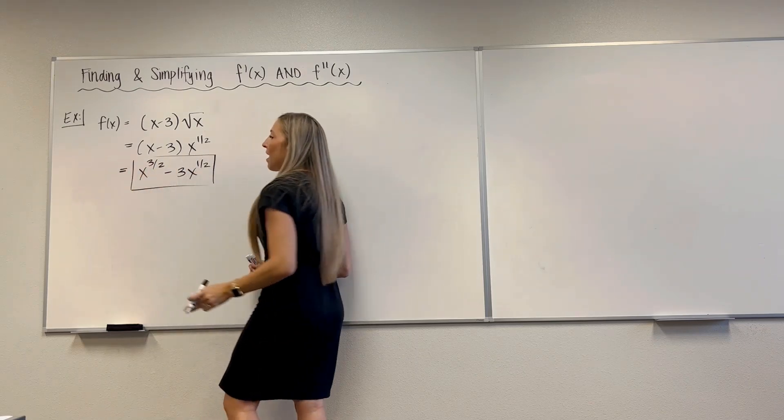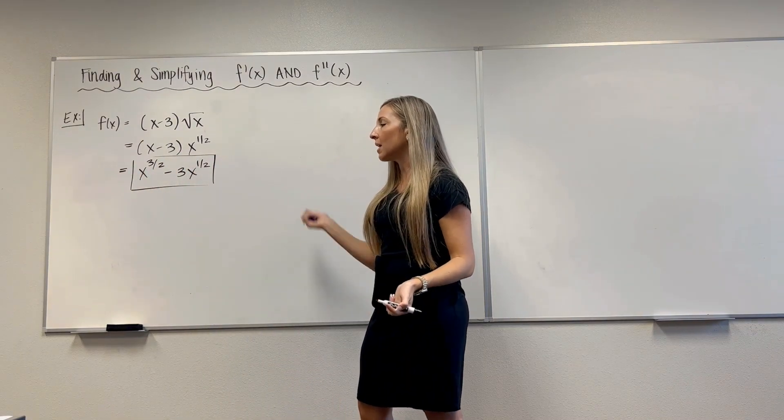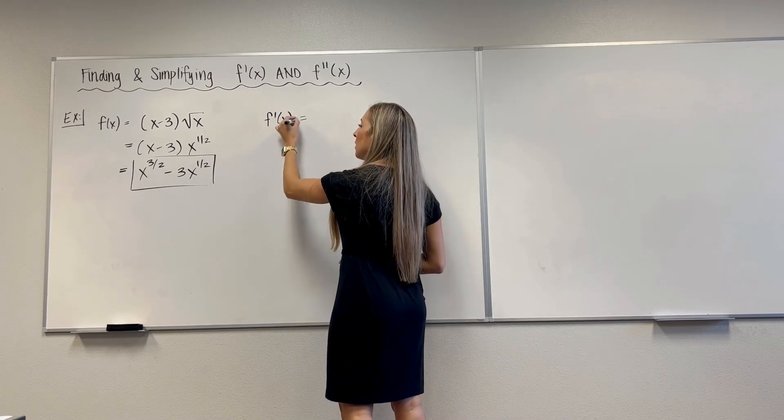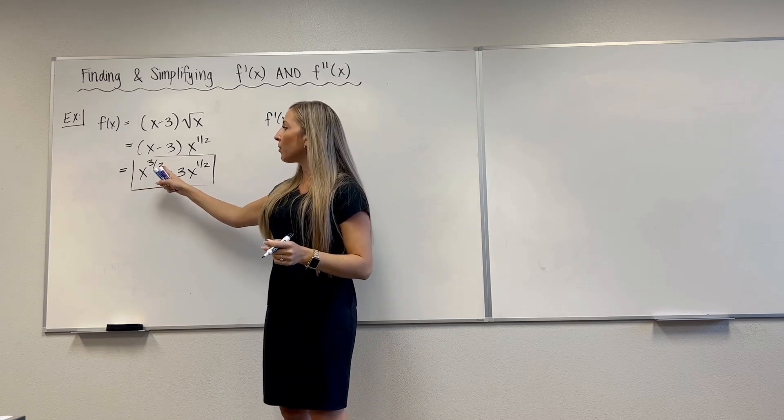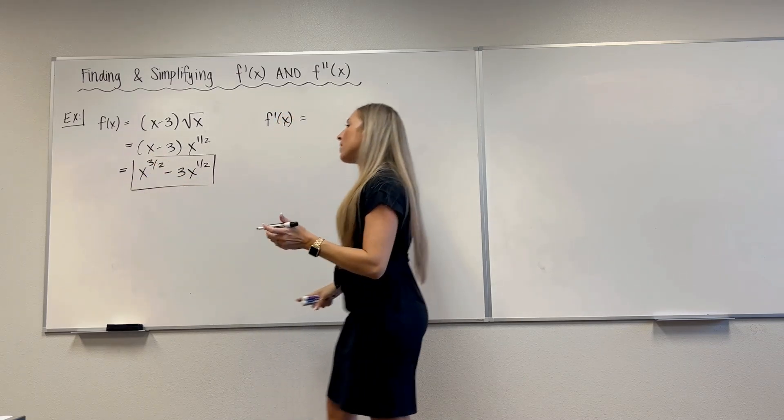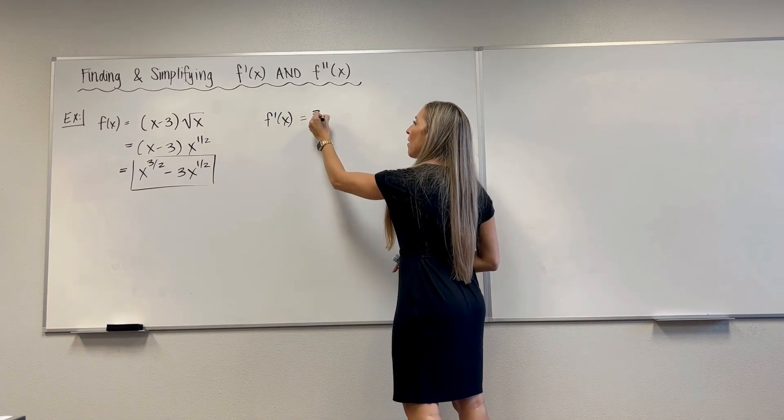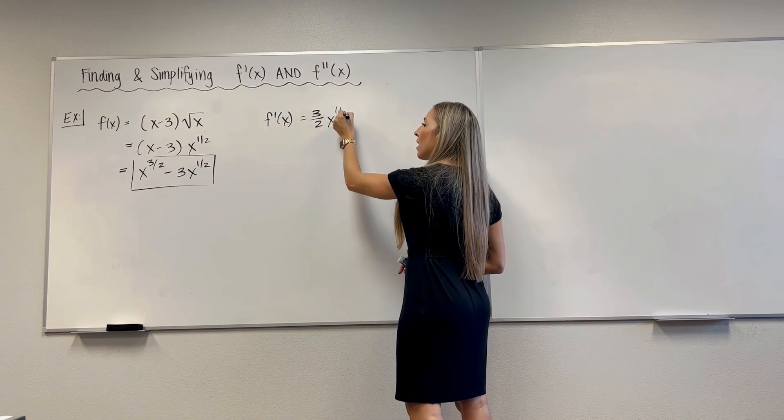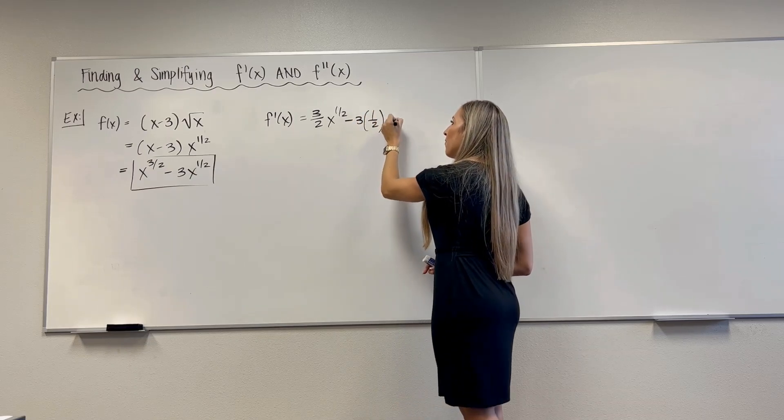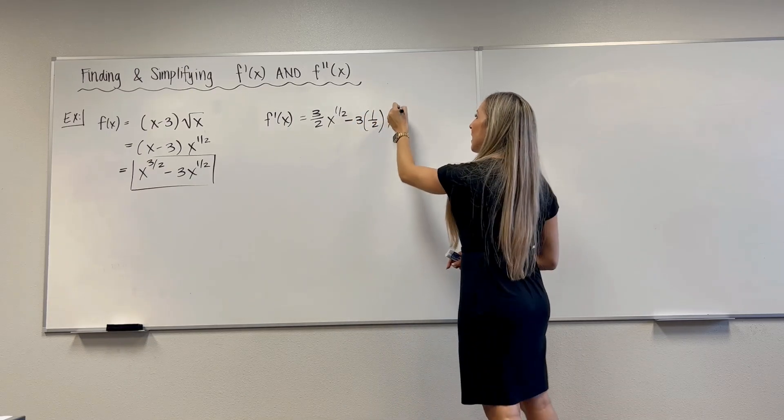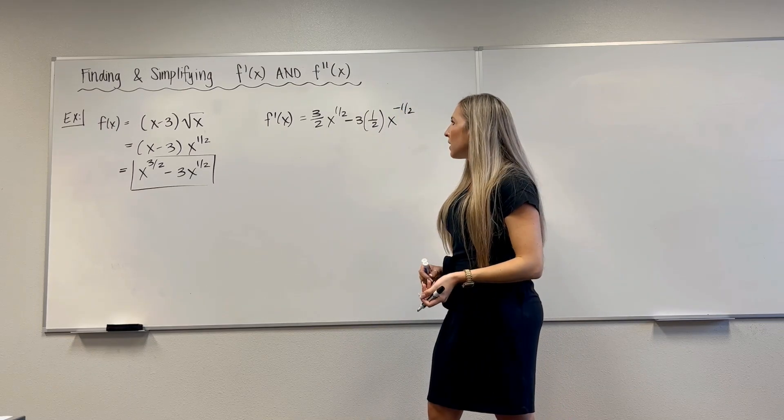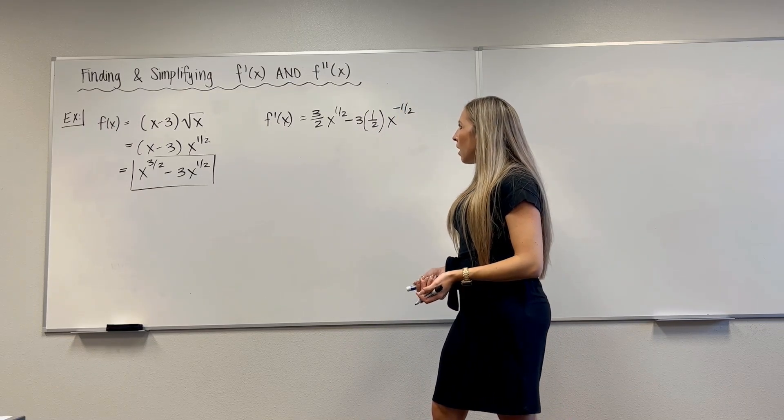So this is equal to x minus 3 times x to the 1 half. I'm not taking any derivatives yet. And then when I distribute through, this is going to be x to the 3 halves minus 3x to the 1 half. Now to find f prime of x, it's going to be no big deal because I can just differentiate term by term. So f prime of x, derivative of x to the 3 halves. Remember, you bring the exponent down in the front, multiply by it, and then subtract 1. That's the new exponent.